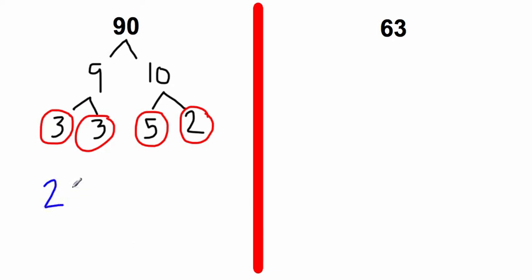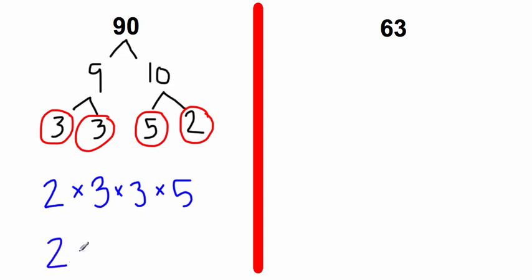We do 2. We've got two 3s, so we do 3 times 3. And then we've got one 5, so we do times 5. If we write this with exponents, all we would do is 2 times 3 to the second power — because there are two 3s, that's what the little 2 represents — times 5. So 2 times 3 to the second power times 5 equals 90.